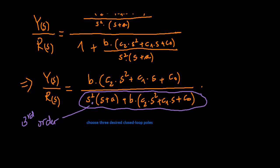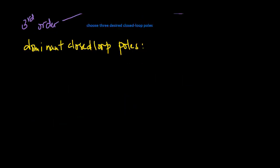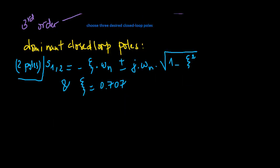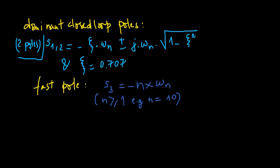In the design of a pole assignment controller, we will choose three desired closed-loop poles for the closed-loop performance specification. A pair of dominant desired closed-loop poles are selected as eta equals 0.707, and the fast pole is then chosen. With this specification, the parameter omega n is approximately the bandwidth of the desired closed-loop system.